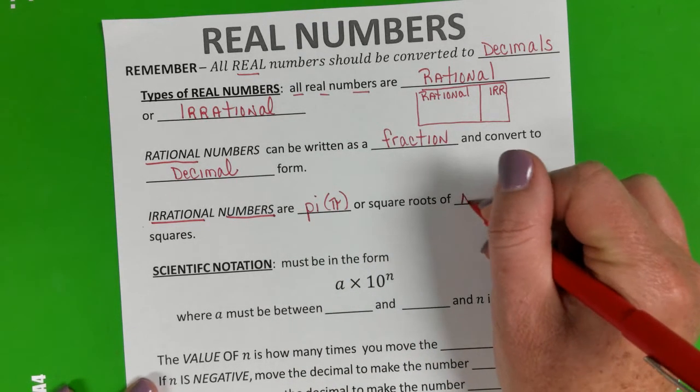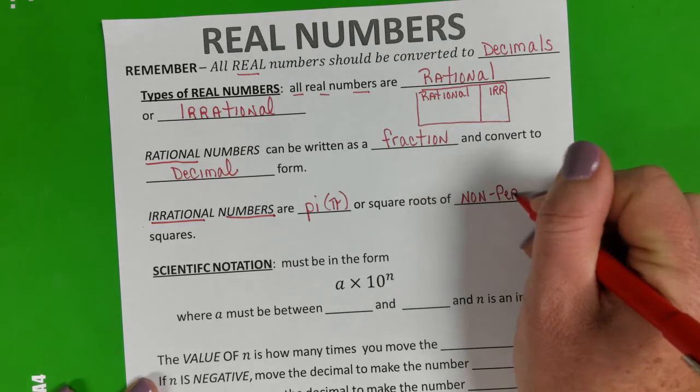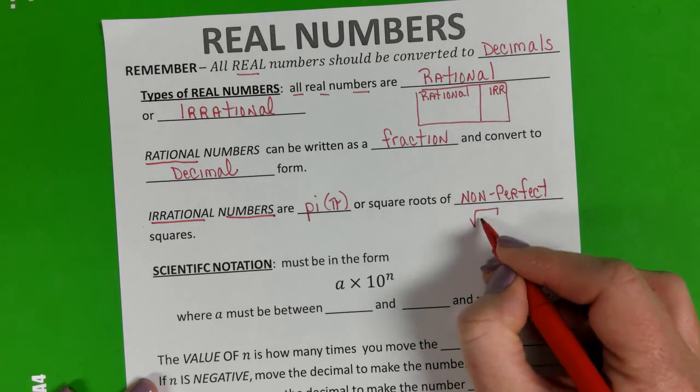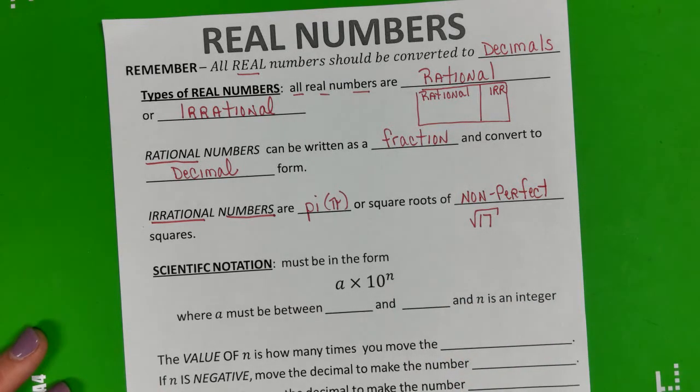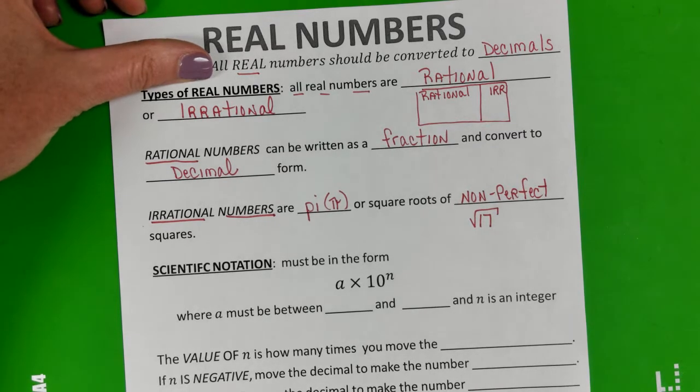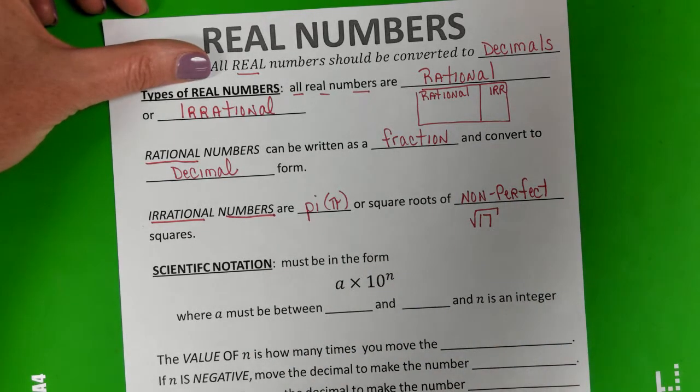Now the only kind of numbers that are irrational are things like pi or square roots of non-perfect squares. Let me give you an example: the square root of 17 is a non-perfect square. 17 is not a perfect square, so that's going to be an example of an irrational number.